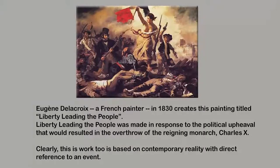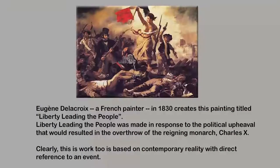Now let us look at another painting by a French painter called Delacroix — a painting he painted in 1830 with the title Liberty Leading the People. Once again, the title immediately evokes the French Revolution. This painting was made in response to the political upheaval that would result in the overthrow of the reigning monarch Charles X. Like the previous one by Goya, this one by Delacroix is based on contemporary reality with direct reference to an event very close to their time — in fact, this happened during their time.